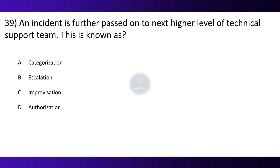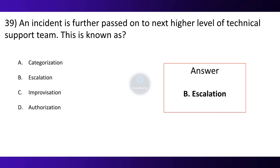Question 39. An incident is further passed on to the next higher level of technical support team. This is known as: Option A: Categorization. Option B: Escalation. Option C: Improvisation. Option D: Authorization. The correct option is B, Escalation.